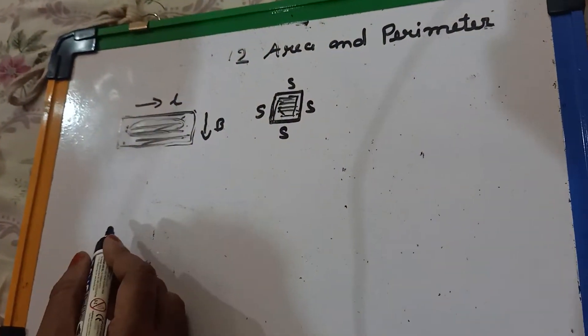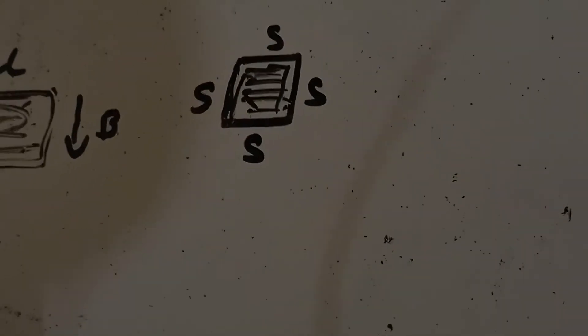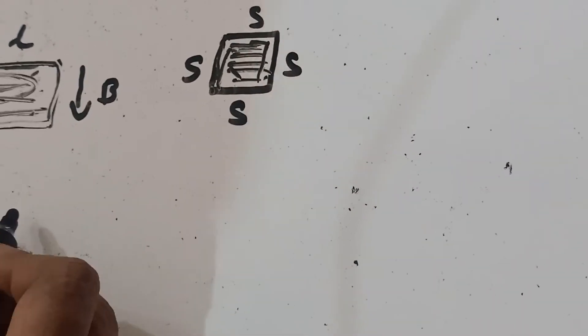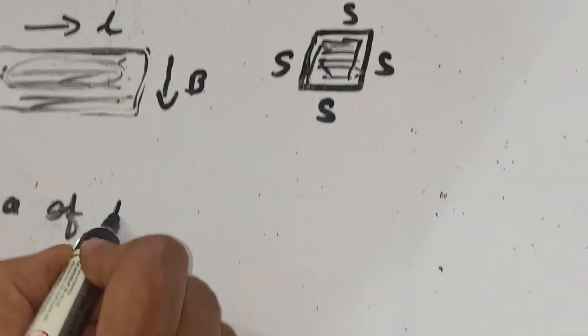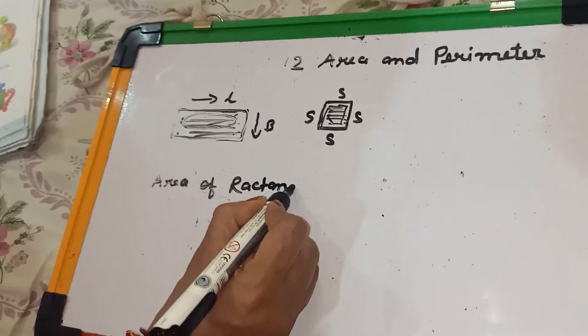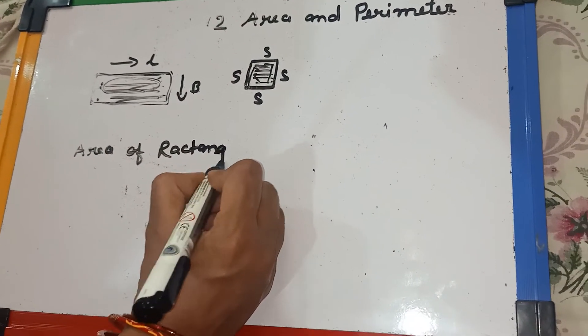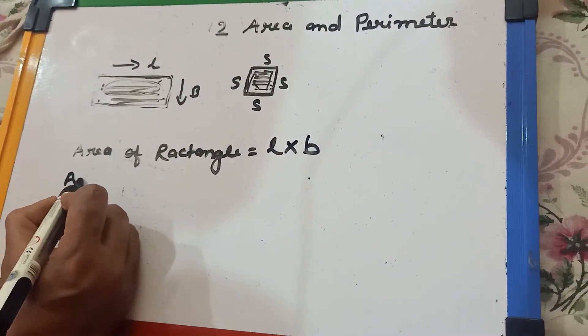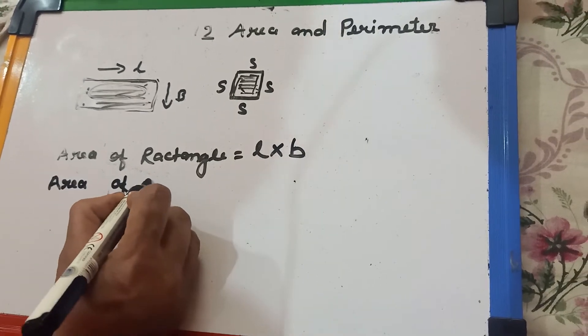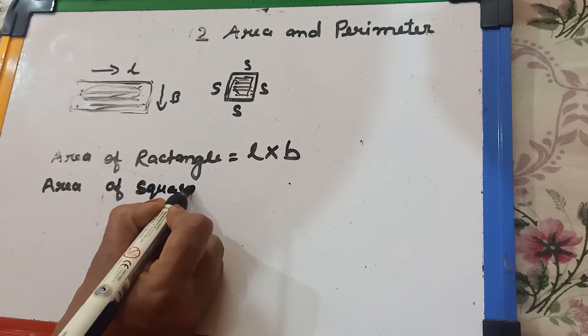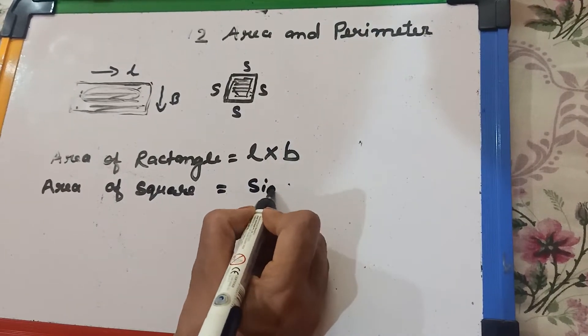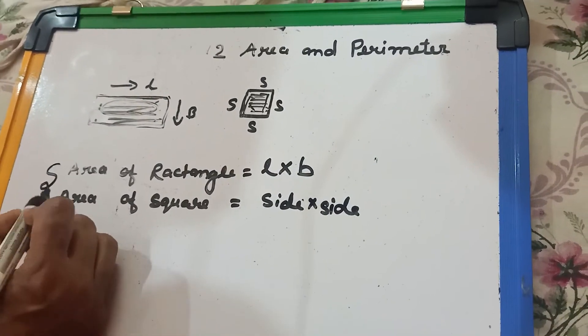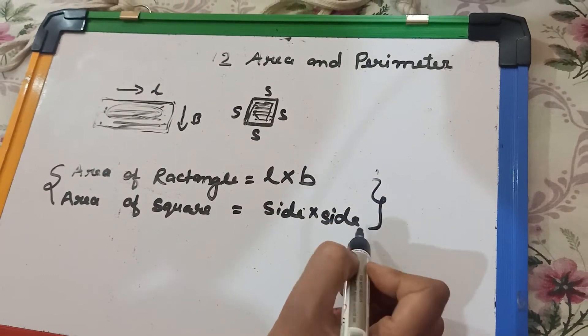Now first you know what is the formula of area of rectangle. Here I am writing, you note down it. Area of rectangle is equal to length into breadth. And same, area of square is equal to side into side. Children, first you note down these two formulas in your notebook.